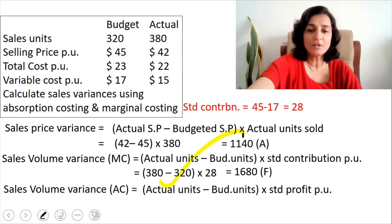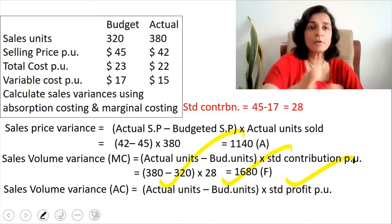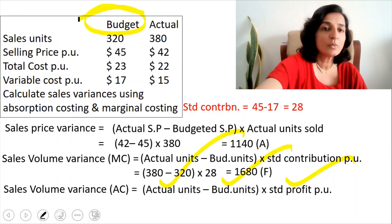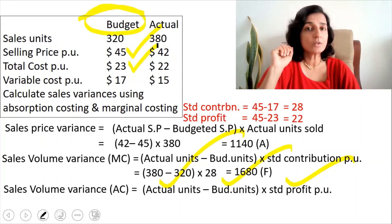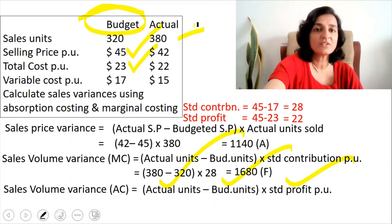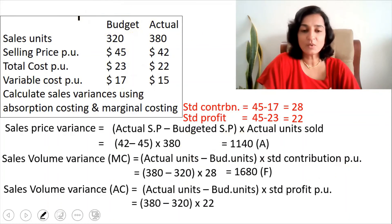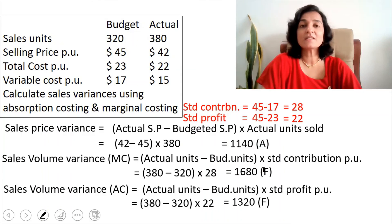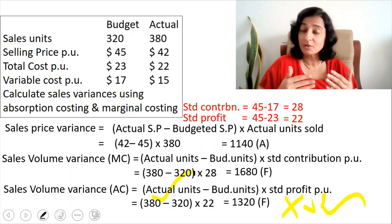For the sales volume variance under absorption costing: actual units minus budgeted units, multiplied by standard profit per unit. Standard profit is taken from the budget column — it is selling price minus total cost, so 45 minus 23 equals 22. Substituting: actual units 380 minus budgeted units 320, multiplied by standard profit of 22, gives a favorable variance of 1,320 — favorable because the result is positive and actual units exceeded budgeted units.